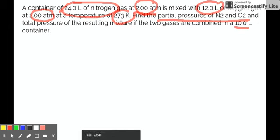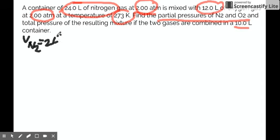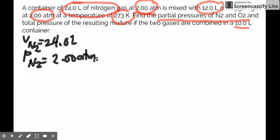That's why this problem asks for the partial pressure of N2 and O2 when they are compressed in a 10 liter container. So let's look at our given so that we will understand it further. So the temperature, let's start with N2. We know that the volume of N2 is 24.0 liters. And then the pressure of N2 initial, not yet mixed, is 2.00 atmosphere.